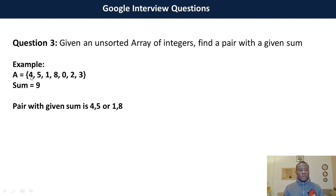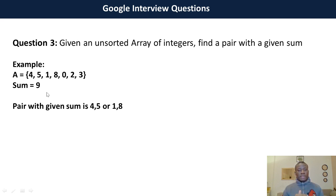The first solution is to iterate through all the elements. For 4, you compare with 5 and check if it equals 9, then 4 plus 1, and so on. After you move to 5, you check 5 plus 4, then 5 plus 1, and so on. This approach uses two for loops — one outer and one nested — which means the time complexity will be O(n²). We don't want that.